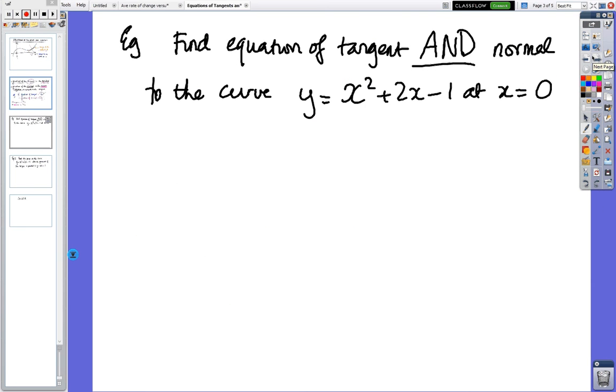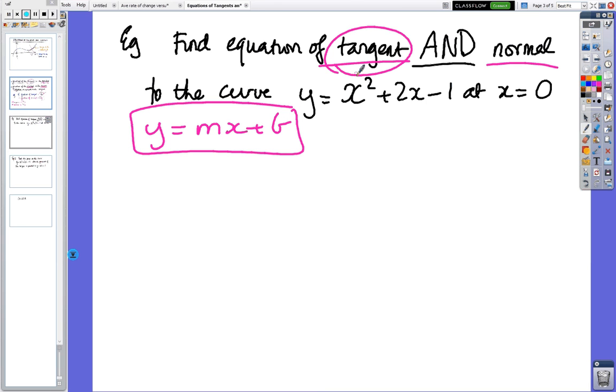Okay, so let's look at an example of an equation of a tangent and a normal. These are pretty straightforward. Just remember that tangents and normals are straight lines, so at the end of the day, we have to have y equals mx plus b as our, you know, something in that form as our answer. So it doesn't matter if you find the tangent or the normal, you've always got to start with the derivative.